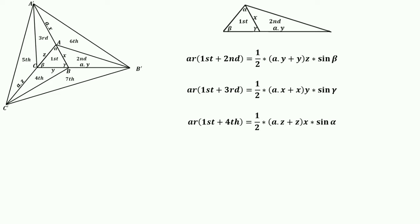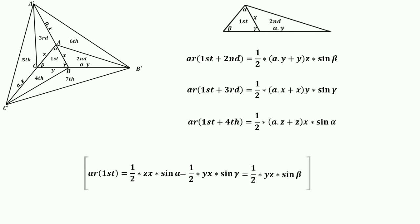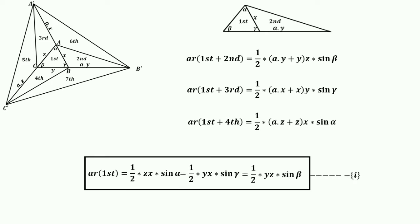For triangle ABC (region 1), we can compute its area in three different ways using the sine formula. Considering angle α: area of region 1 = ½·xz·sin(α). Considering angle γ we get another form, and considering angle β we get a third form. These three expressions form equation 1.